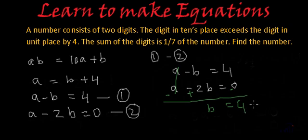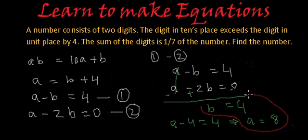And if we put this value of B as 4 in equation number 1, we will get A minus 4 is equal to 4. If we transpose this minus 4, we will get A is equal to 8. So this is our solution. We have got A is equal to 8 and B as 4. So the number AB will actually be 84.